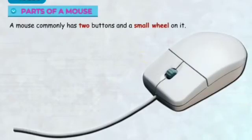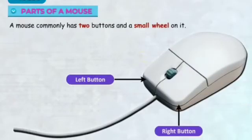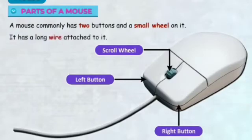A mouse commonly has two buttons and a small wheel on it. It has a long wire attached to it.